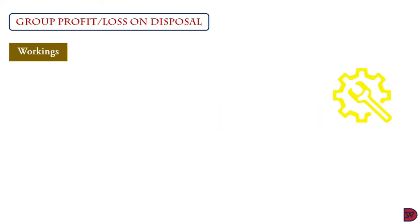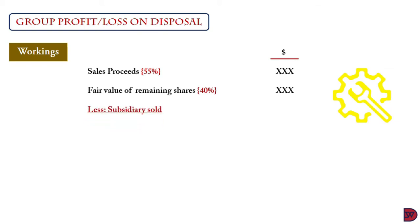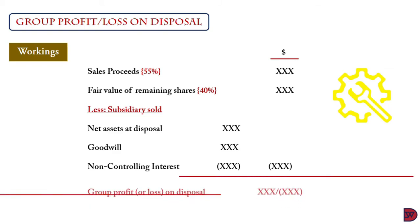Let's look at the calculation of the group profit or loss on disposal. We start with the sales proceeds on the amount disposed of, then we add the fair value of the remaining shares — which is 40% in the scenario we looked at. Then we subtract the value of the subsidiary sold, starting with the net assets of the subsidiary at disposal, then we add goodwill, then we less non-controlling interest at the date of disposal, which gives us the group profit or loss on disposal.